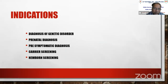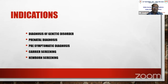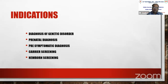What are the indications for genetic testing in pediatric practice? First is diagnosis of a genetic disorder — whether chromosomal or single gene — where confirmation requires genetic testing. Second is prenatal diagnosis, when the first child is affected, there is a family history of a genetic disorder, or ultrasound abnormalities are identified. Samples are collected from amniotic fluid or chorionic villus sampling.